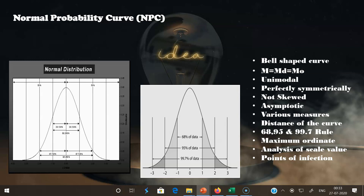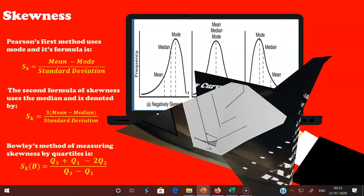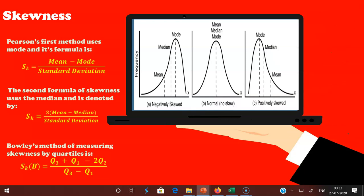For finding the answer to the fourth question about shape, we also consider asymmetric distributions. The normal probability curve is symmetric, but other shapes exist. Skewness is the deviation from normality — it refers to the asymmetrical nature of a distribution. The degree of departure from symmetry is called skewness. Distributions in which mean, median, and mode fall at different points are known as skewed distributions.